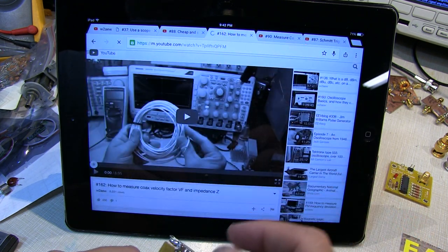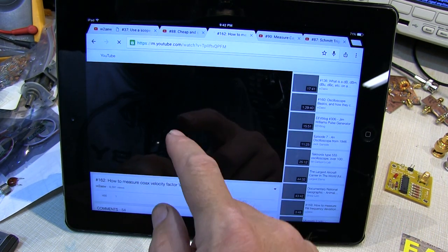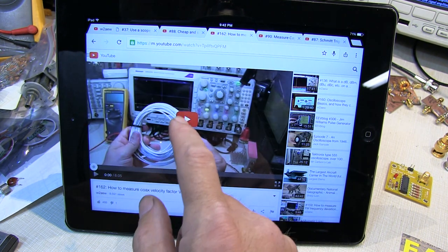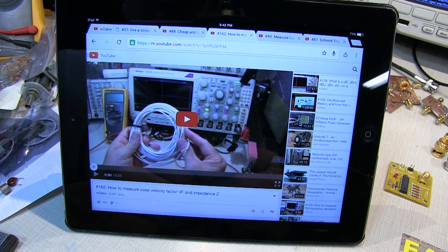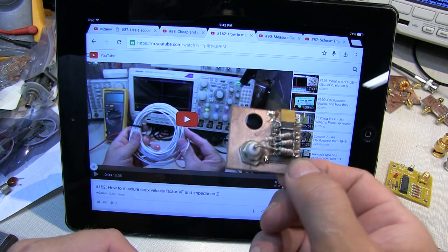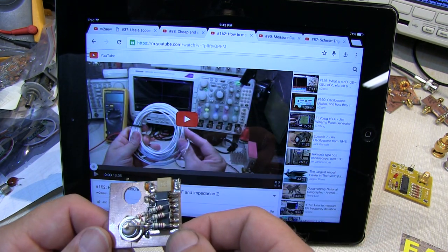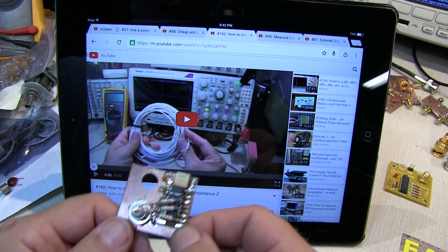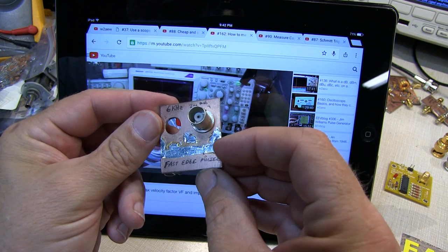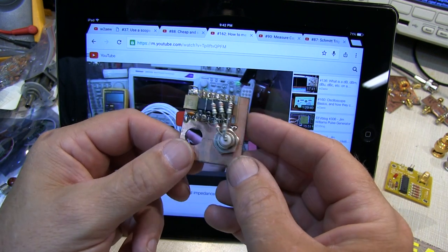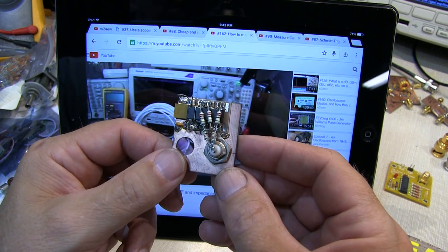And then also video number 162. This one shows you how to measure coax velocity factor and impedance, but all using the same technique. I think this video also used a signal generator, but this could be used in its place. So needless to say, this was a very popular oscillator, and I used it in a number of places.